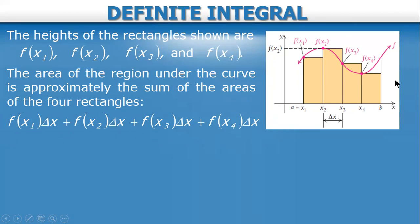This is only an approximation because some small areas above the curve are included in the rectangles but not part of the true region, while some areas below the curve are missed. More or less these cancel out, so the result is close to the true area — but it is still only an approximate value.